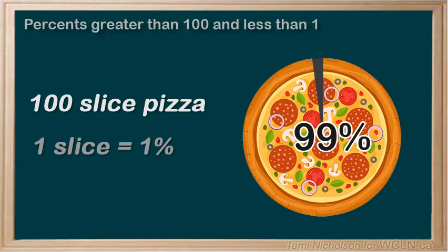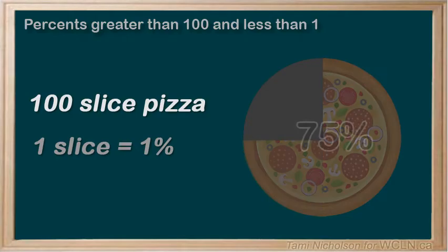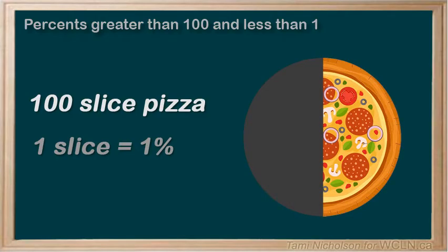If you eat 25 slices, that's 25% in your stomach and 75% of the pizza left. If you eat half a pizza, 50 slices, you ate 50% and have 50% of the pizza left.